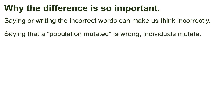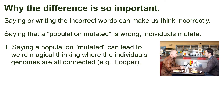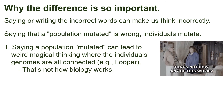Saying that a population mutated is wrong because only individuals mutate, and it can mess up our thinking. One specific problem is that it can lead to a kind of magical thinking where individual genomes are all connected somehow. For example, in the movie Looper, humans are evolving to have telekinesis and they try to explain it as a biological process, not magic. But this trait has become common in only a couple of generations, which doesn't make sense if it's a mutation that arose and spread the way they describe — that's way too fast. The idea that populations mutate clearly misled the writers. That's not how biology works. That's not how evolution works.